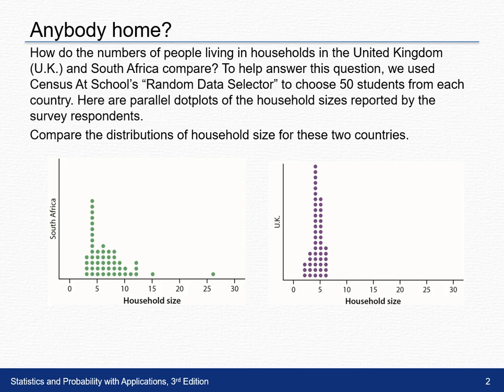To help answer this question, we use a census at the school's random data selector to choose 50 students from each country. Here are parallel dot plots of the household sizes reported by the survey respondents. Parallel dot plots means that we have two dot plots on the same scale.